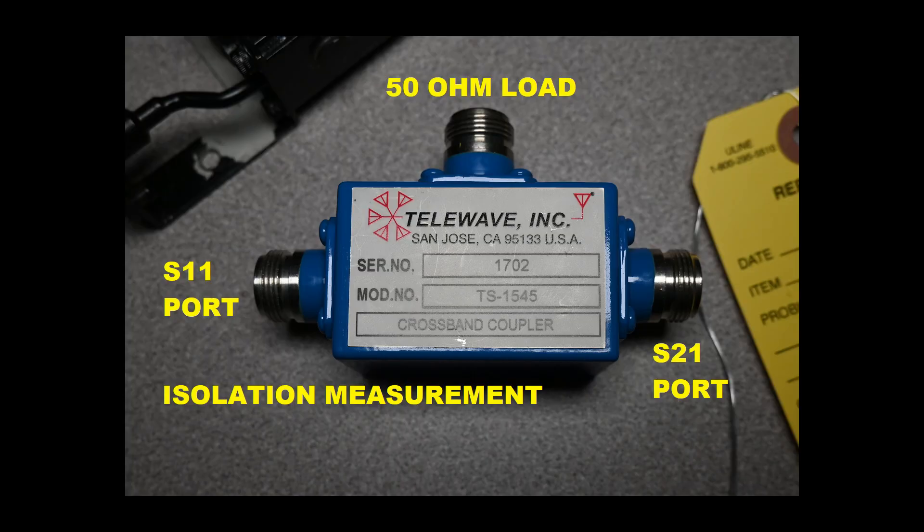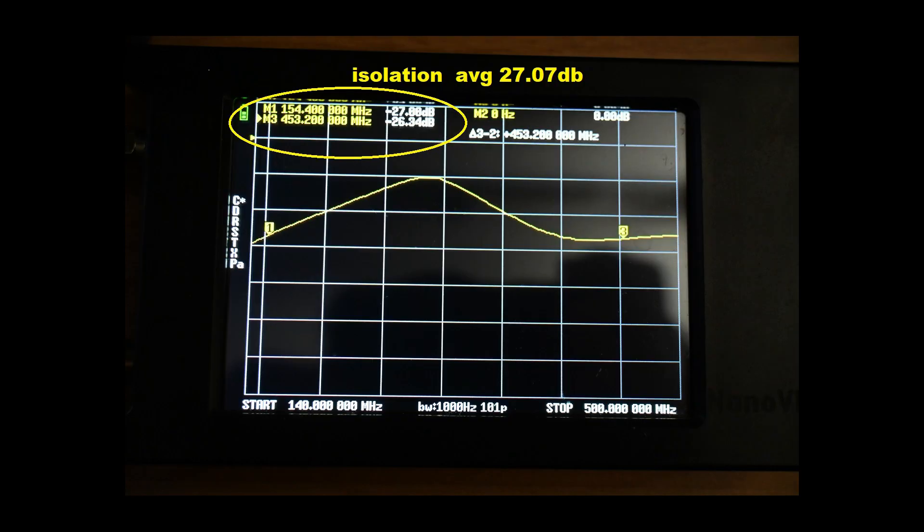Now we reconfigure our connections for the isolation measurement as shown. We feed S11 RF through the device and receive it on S21 and place the load on the antenna port. And here are the results of our isolation measurement which is an average of 27 dB. Note the numbers almost coincide with the measurement data captured in our insertion loss measurement.